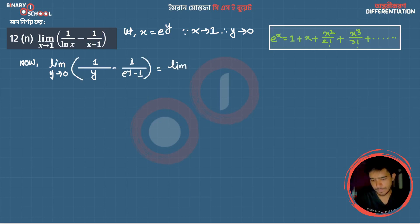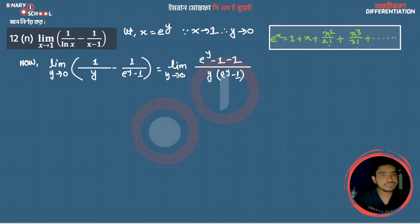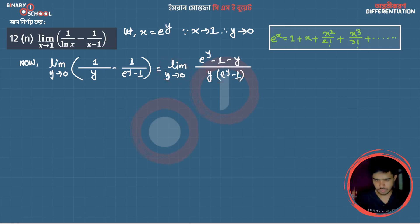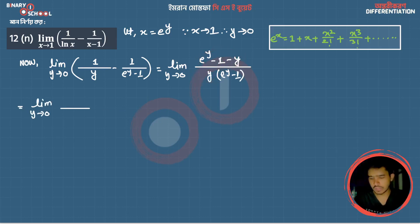Let's give the limit. We can take the limit as y tends to 0. Working through the algebra, we get the expression (e^y minus 1 minus y) divided by y squared, as y tends to 0.